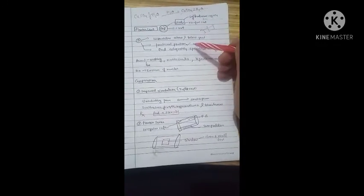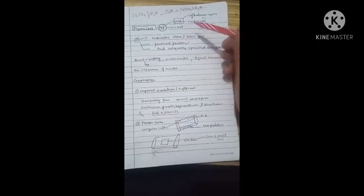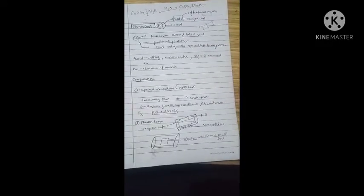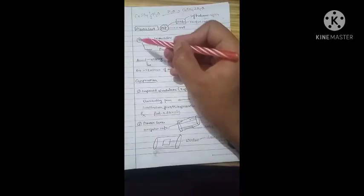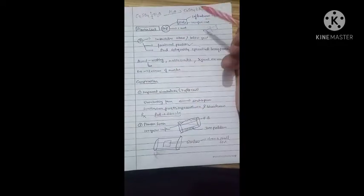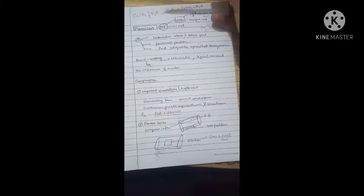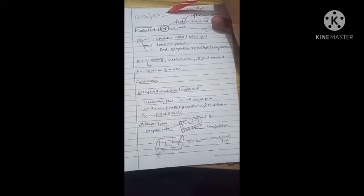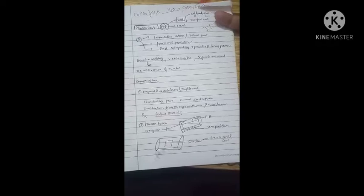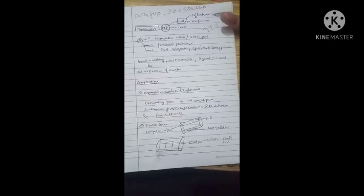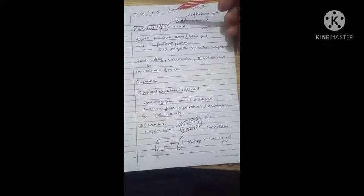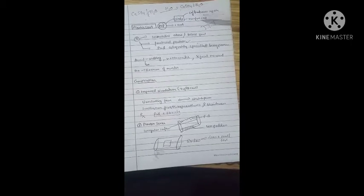Talking about plaster of paris, that is gypsum salt, the formula is CaSO4·½H2O. Adding water converts it into CaSO4·2H2O, which is solid form. This is an irreversible reaction leading to a permanent solid change.